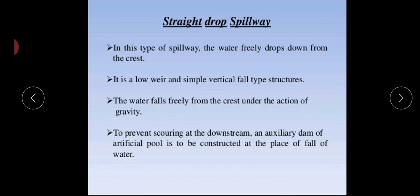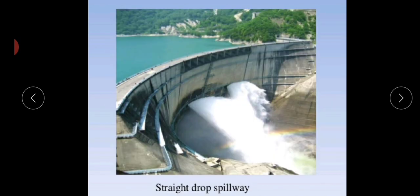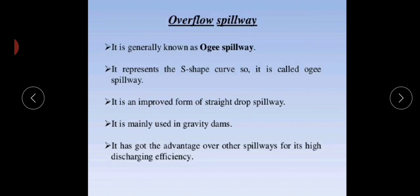The straight drop spillway is a type where water freely drops from the crest. It is a low weir and simple vertical fall type of structure where water flows freely from the crest under the action of gravity. To prevent scouring at the downstream side, an apron or artificial pool is constructed at the place where the water falls.